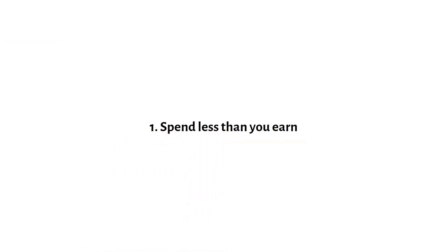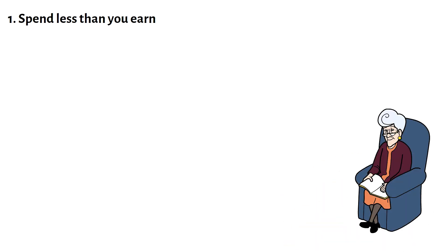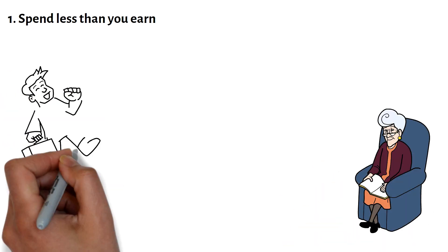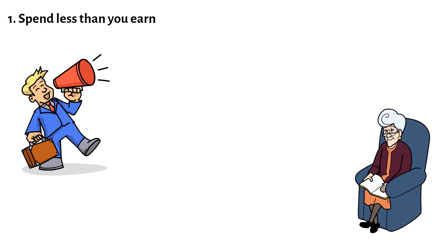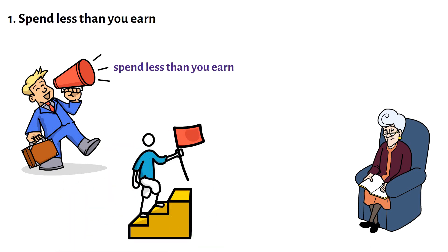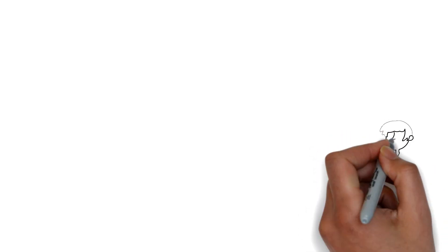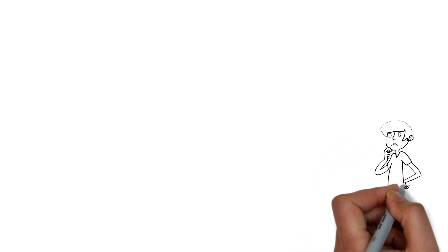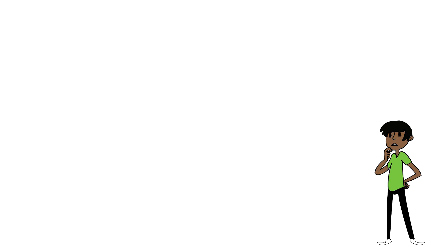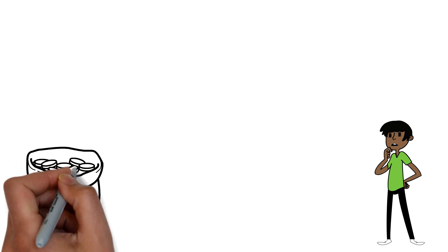1. Spend Less Than You Earn. Saving money is crucial to ensure a comfortable and stress-free future. One of the most important financial rules that you should follow is to spend less than you earn. This is the foundation of financial stability and the first step towards retiring rich. It's essential to understand that relying solely on social security benefits is not enough to lead a comfortable life in your golden years.